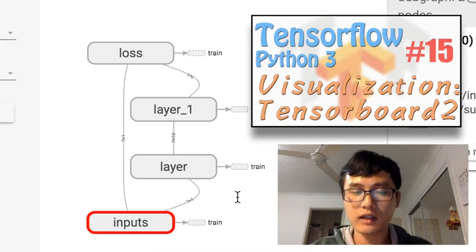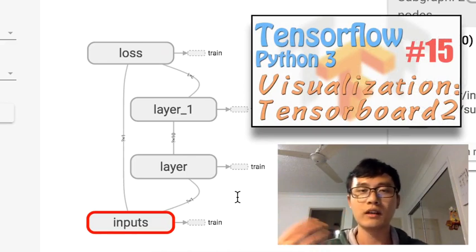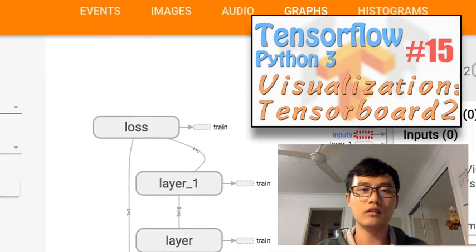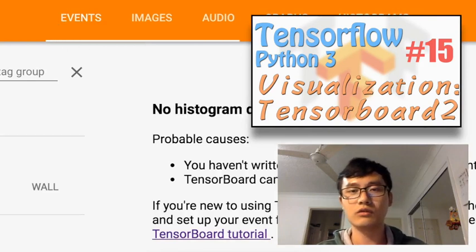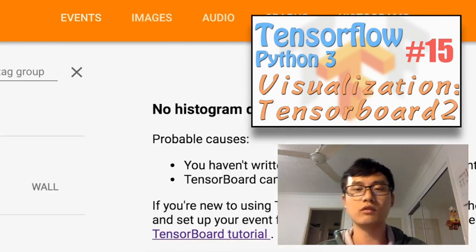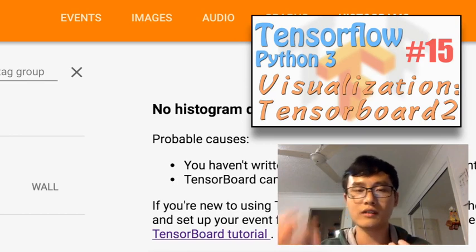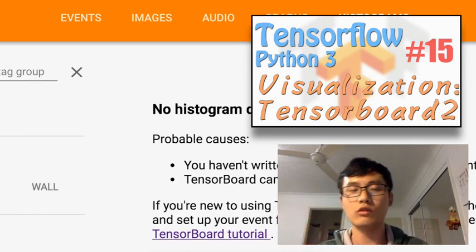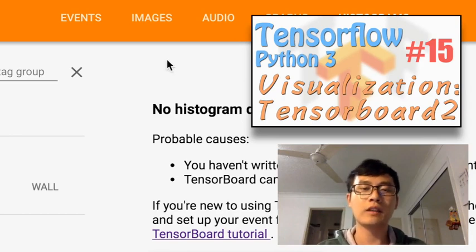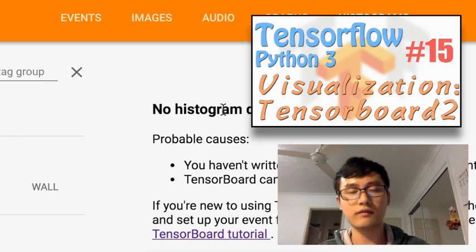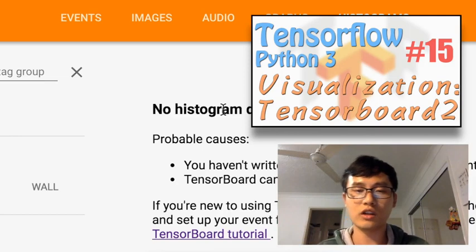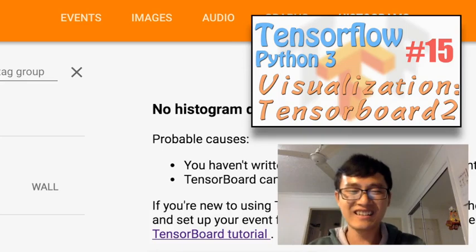So this is for today. And next time we're going to talk about TensorBoard again. But next time we're going to talk about how to create the events and how to create the histograms to show the trend steps of your weight or bias or your loss. Something like that. So hope you will like my videos. If you want to watch more about TensorFlow or more about machine learning, you can actually subscribe to my channel and see if you can find more. So see you next time. Bye.